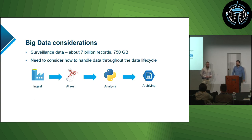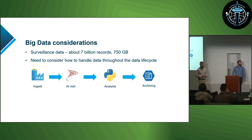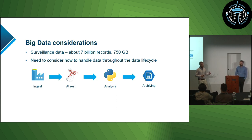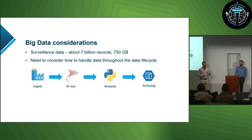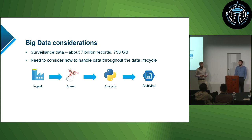Before we finish, I want to talk about the solution from a big data perspective. Our primary surveillance data set is very large — about 7 billion rows, or around 750 gigabytes on disk. The scale, particularly the number of records, poses unique challenges at each stage of the data lifecycle. We're still early in our big data journey and haven't got the combination of techniques and technologies quite right yet, but we've learned a few lessons along the way.